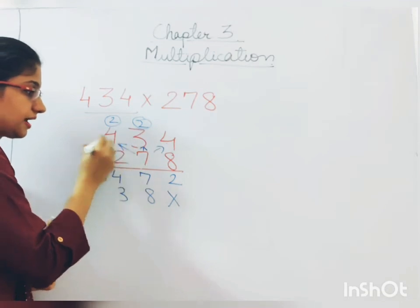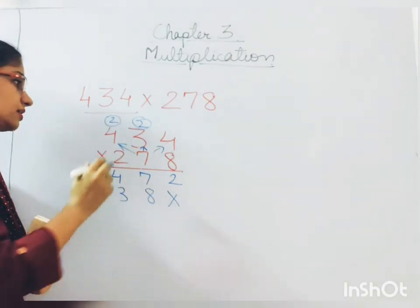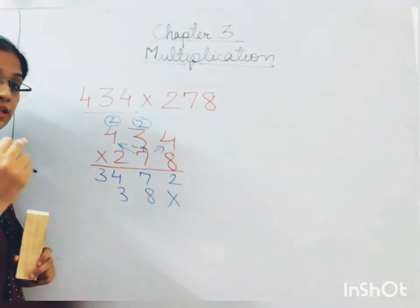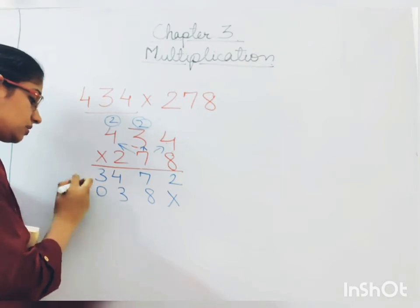7 multiplied by 4. Correct. That is 28. Plus 2. That will be 30. So 3 and 0. 30.